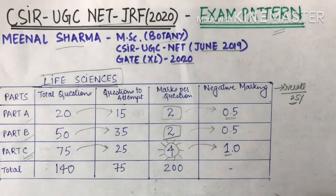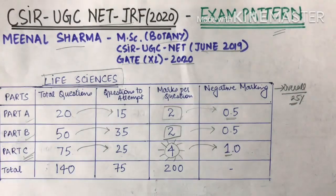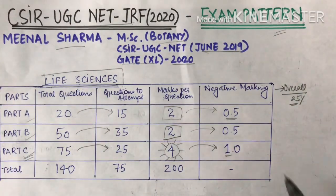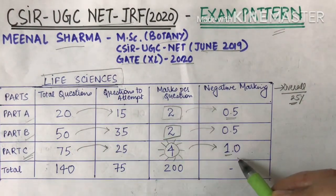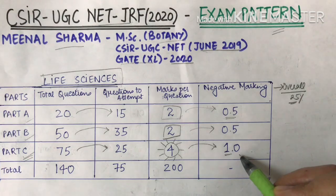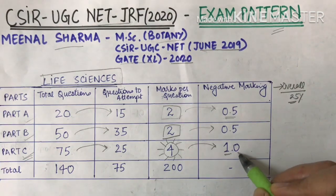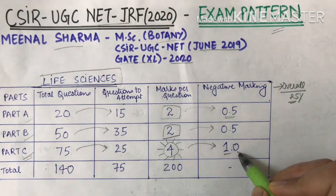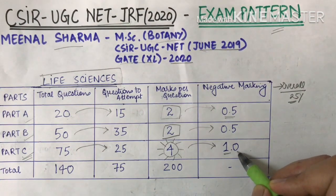So if you have a wrong answer, you will lose 1 mark. The negative marking in Part C is also very significant, so we have to attempt this section very carefully.